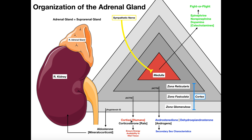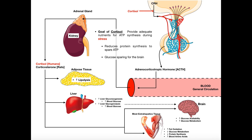Understand that in some mammals, like rats and other rodents, cortisol's function is replaced with corticosterone. But we're going to restrict our discussion to humans and cortisol, and we'll talk about how this works here in this video.